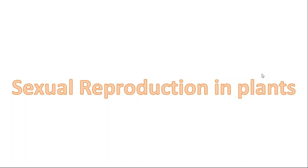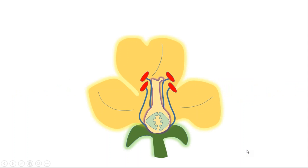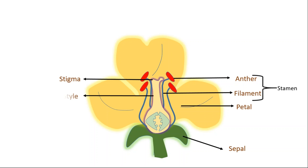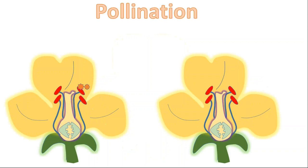Sexual Reproduction in Plants. As you all know, the flower is the reproductive part of a plant. It contains anther and filament, collectively known as stamen, as well as petal, sepal, stigma, style, ovary, and ovule — collectively known as pistil.